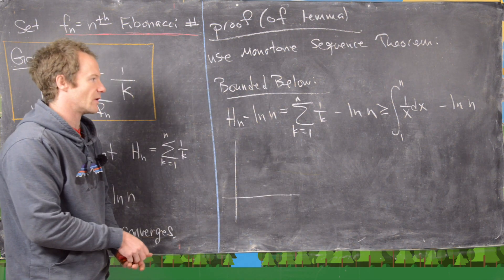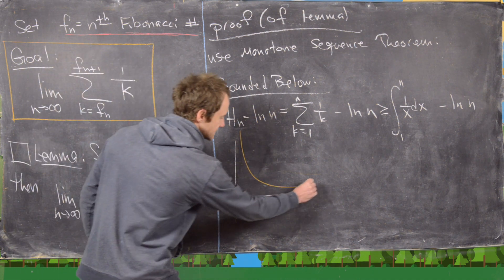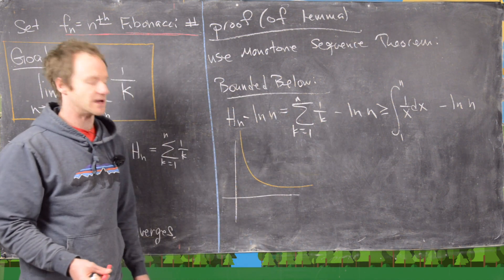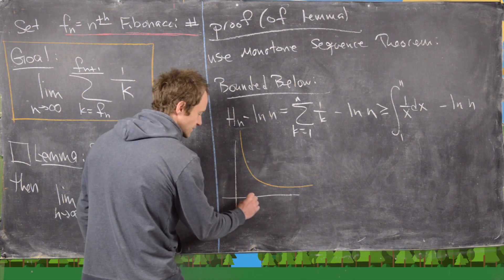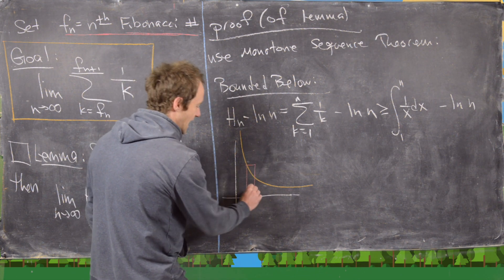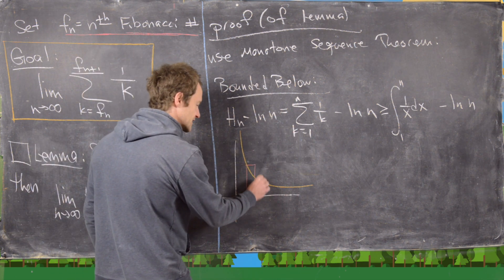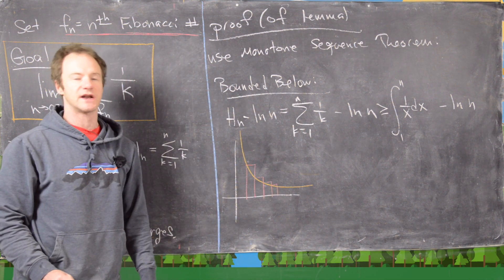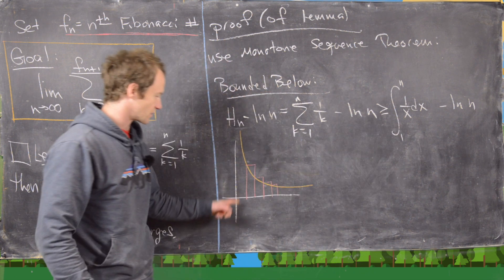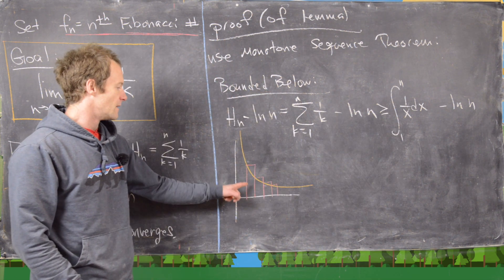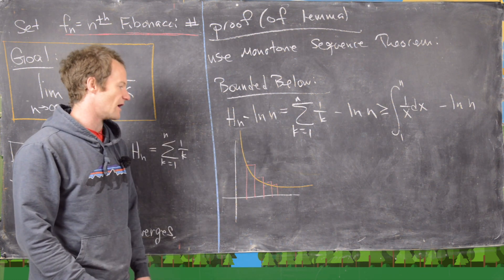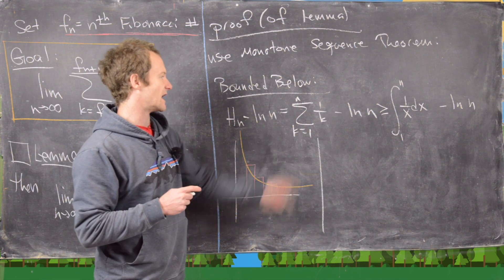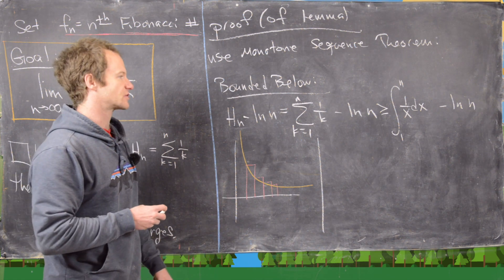We can also look at it graphically. We graph the function 1 over x, and then we put in this sum as a sum of areas of rectangles. For the first term we get one rectangle, then for the second, third, fourth terms, and so on. The integral is the area under the orange curve, but this sum is the area of the red rectangles, and obviously that sum is going to be bigger. Both are finite since we're looking at a finite sum and an integral over a finite region.